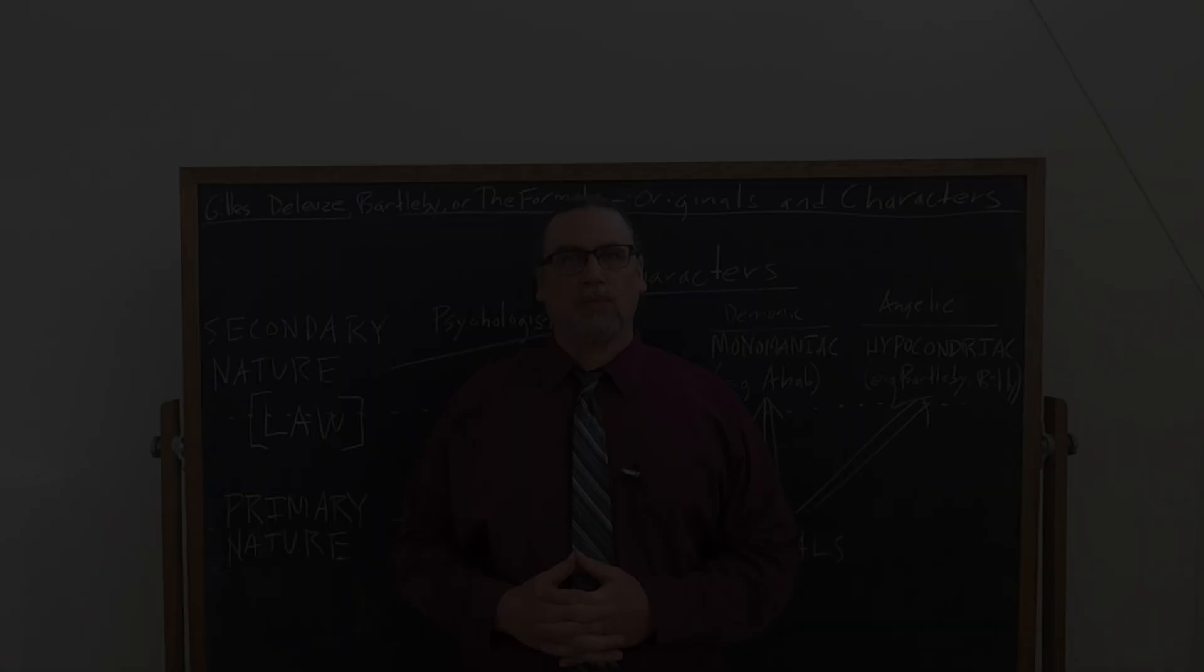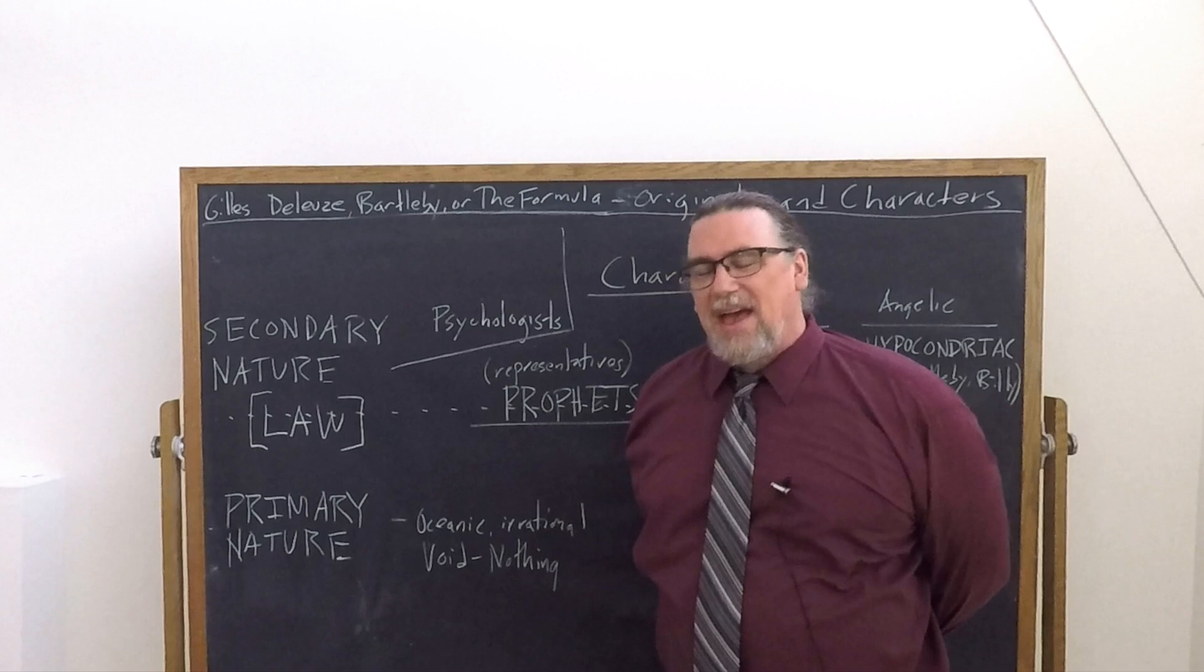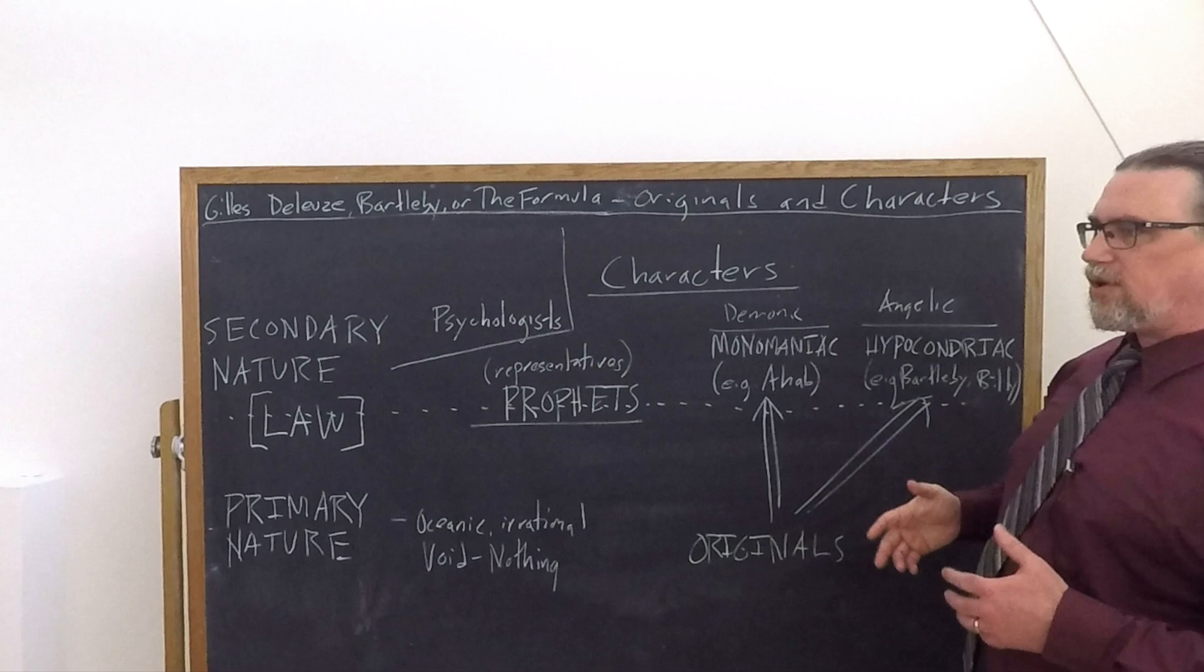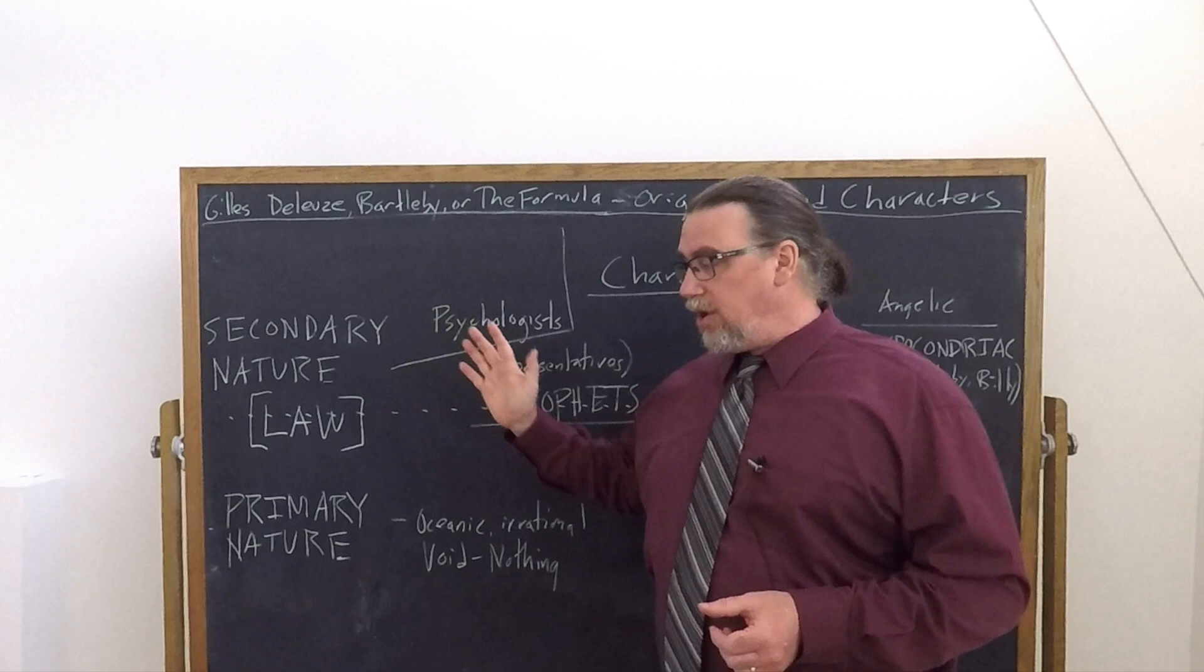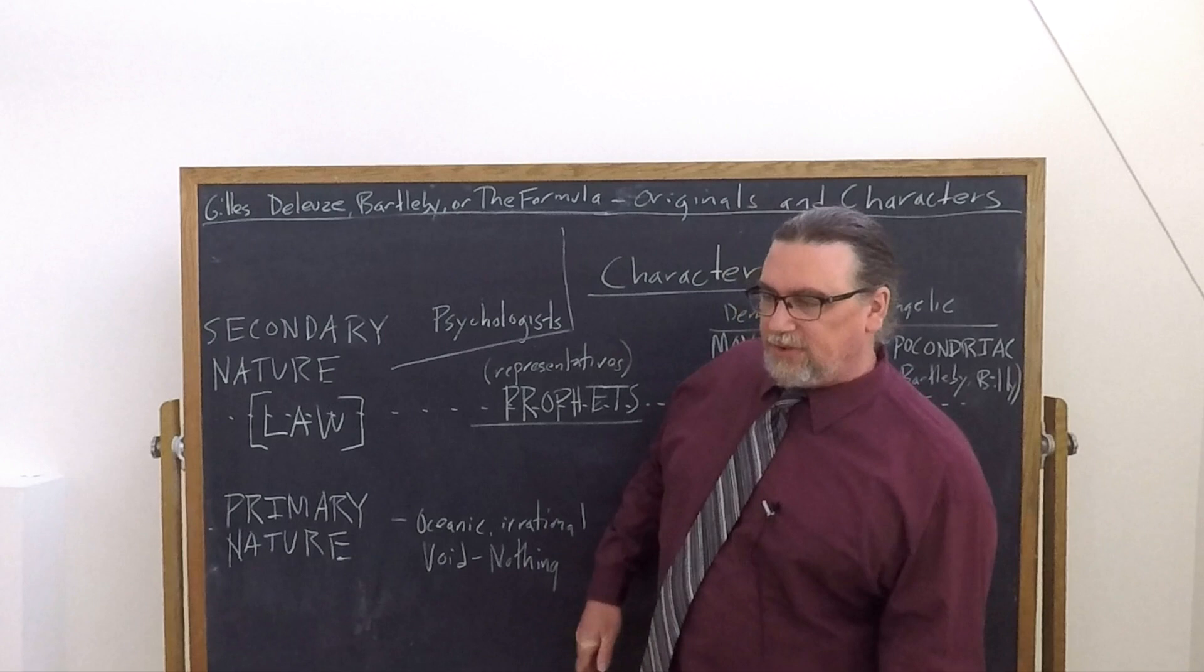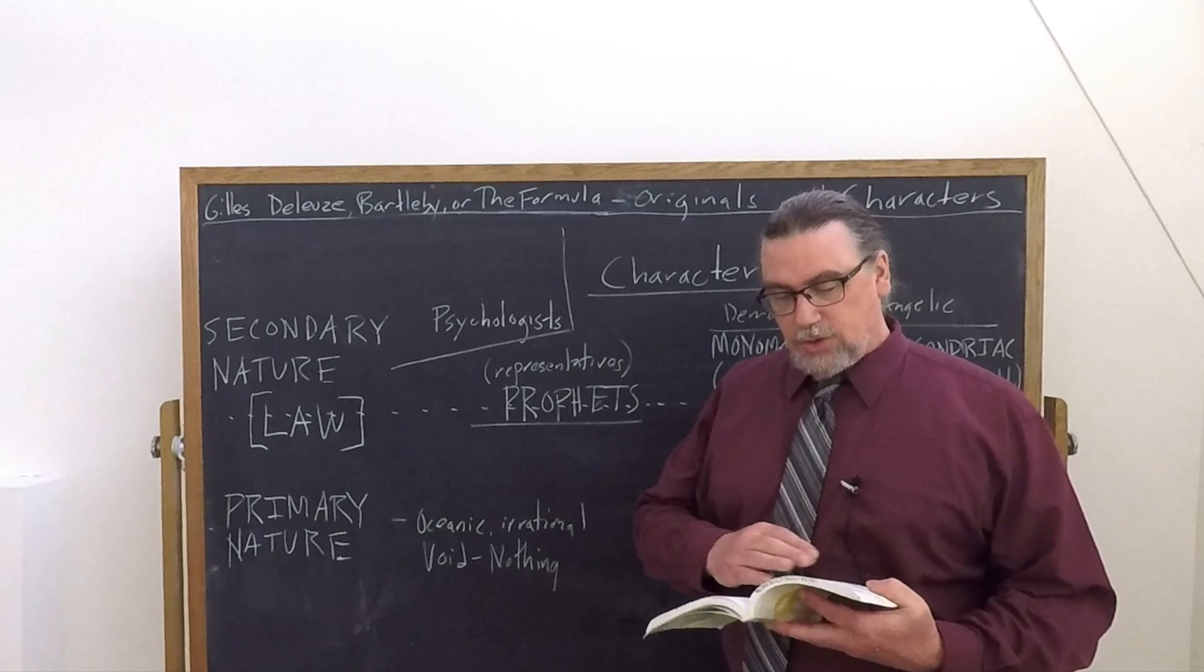In Gilles Deleuze's essay Bartleby or the Formula, one of the most interesting and indeed I'd even go so far as to say fascinating aspects of the essay has to do with this contrast that he's making between characters and originals, which also connects with this distinction he's invoking between secondary nature and primary nature. And the implications for this go far beyond just Melville's work. In fact, he brings up Dostoevsky and other people as well, and he says that this is an aspect of an ancient theory, which we're going to get to shortly.